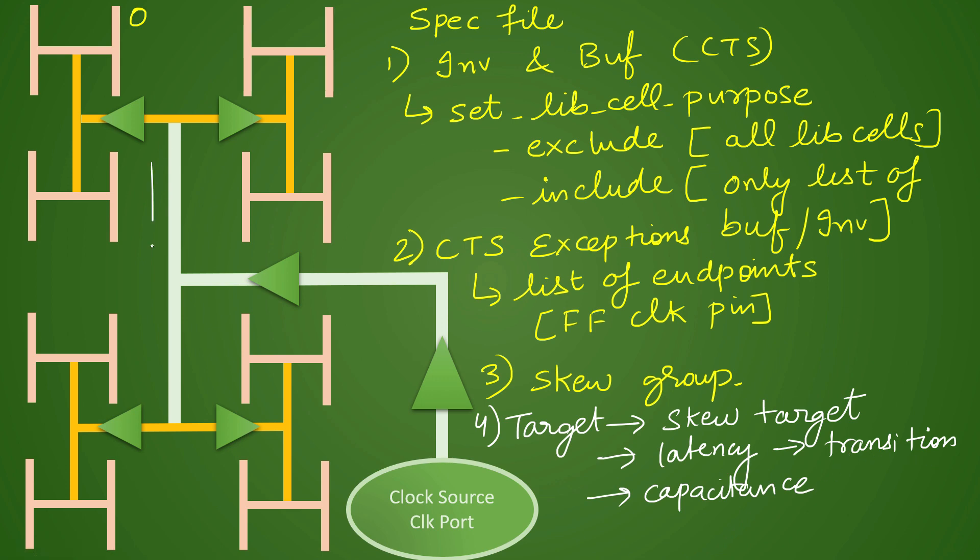If the net is very big, the tool will try to insert the buffer to balance the transition or to meet the transition and bring it down within the limits. If net capacitance is huge or loading is huge, the tool will buffer it or further split the load.